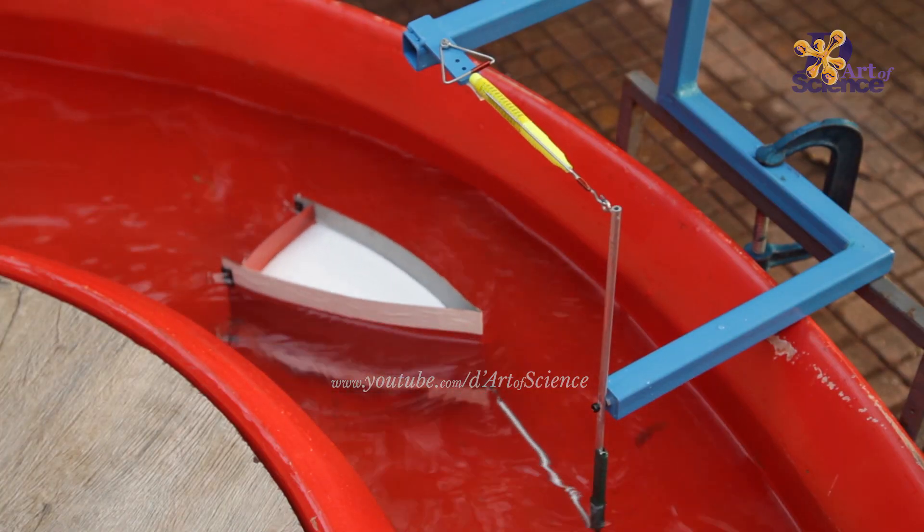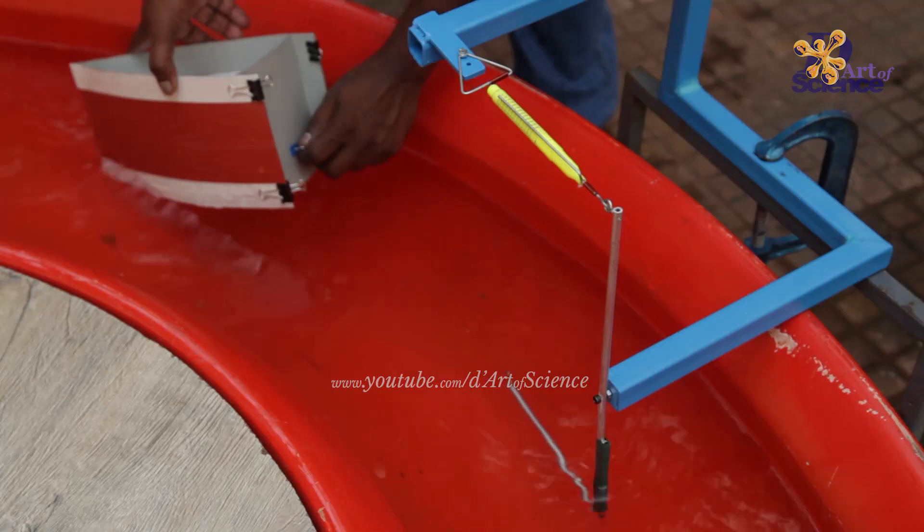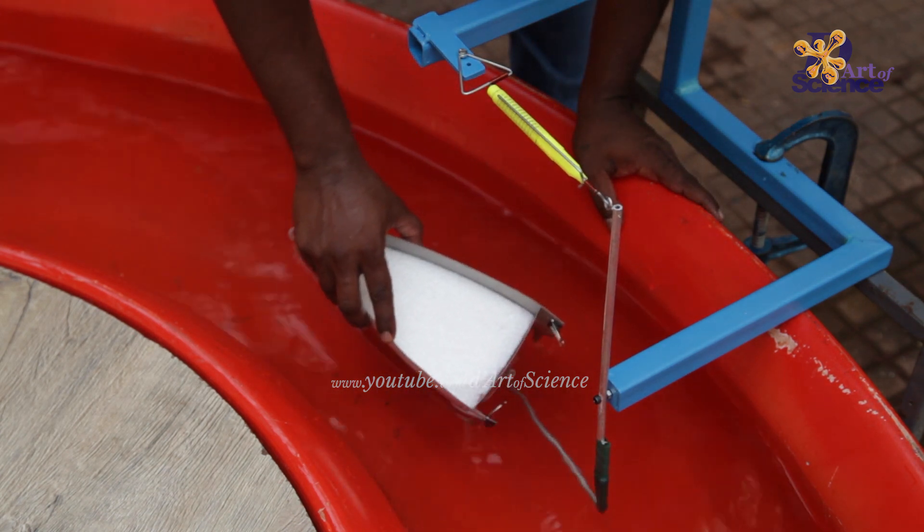This regular motor boat shape is not too bad. It showed a reading of 100g. Now the main test: what if we reverse the shape of a motor boat? Let's see.